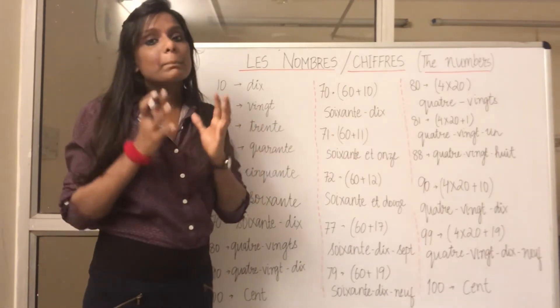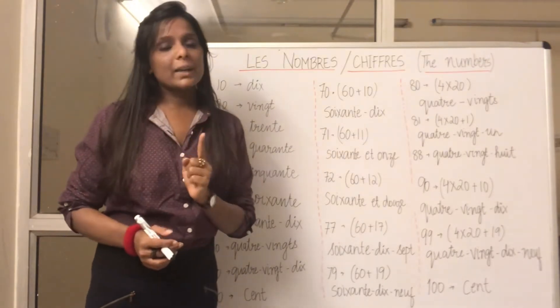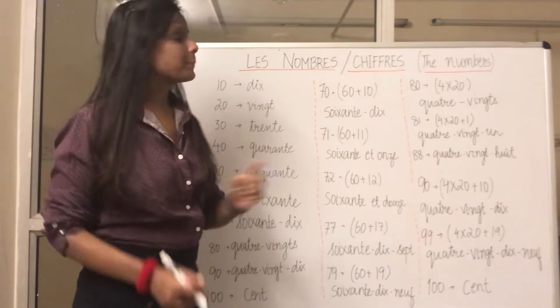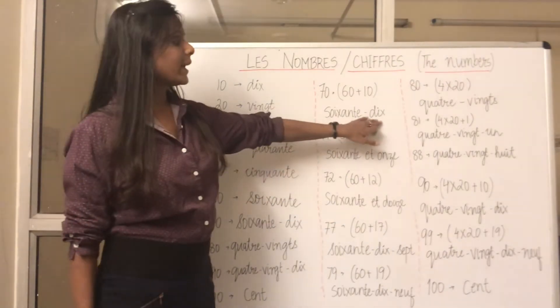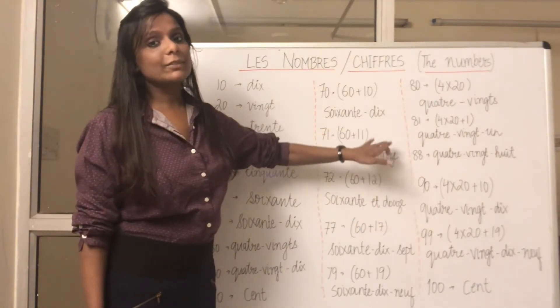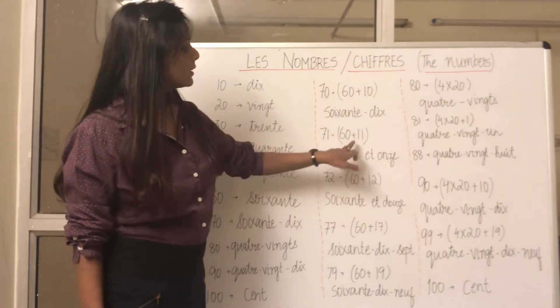Don't forget we have to put a hyphen when we are combining two numbers. So soixante-dix now become one word and it is one number. So the counting from here onwards will be followed by 11, 12, 13 like after dix, 10, 11, 12. So what comes after dix? Onze.